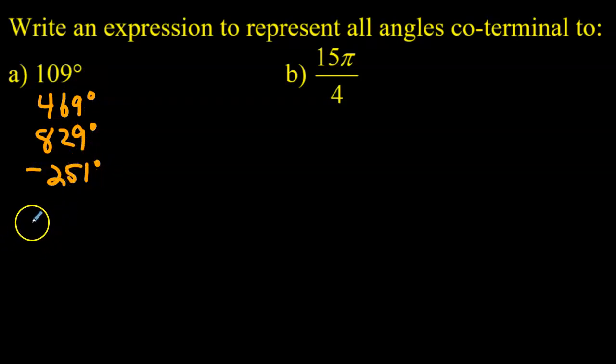So then I can write theta c. Theta reminds me that I'm working with an angle, c is for coterminal angles, is equal to let's start with our original angle 109 degrees. Although really I could start with any of these angles. You can start with any of these angles and generate all of its coterminal angles. I'll start with 109 degrees.